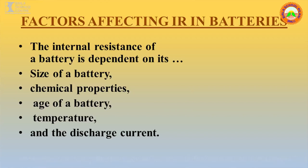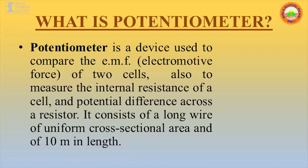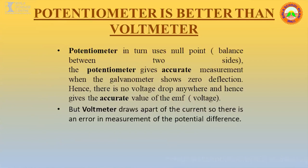To measure the internal resistance of a cell, Jonas discovered a device in 1841 — the potentiometer — which helps in determining the internal resistance of a cell. It is also used to compare the EMF of cells and measure the potential difference across a resistor. It consists of a long wire of uniform cross-sectional area, about 10 meters in length, made of manganin, which has very high resistivity and a low temperature coefficient.